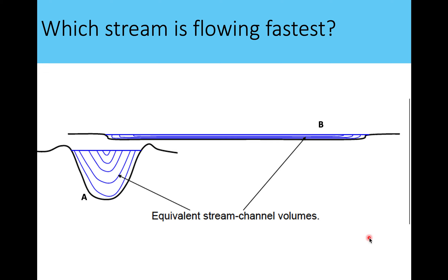If you look at two different streams with the same volume of water — one deeper and one shallower but more spread out — you'd think about friction to determine which flows faster. The shallower stream has a large amount of water in contact with the ground beneath, so you'd expect it to flow slower. The deeper stream would flow faster because there's water further away from the friction-inducing edges. So the shape of the stream determines flow speed even at equal volumes.